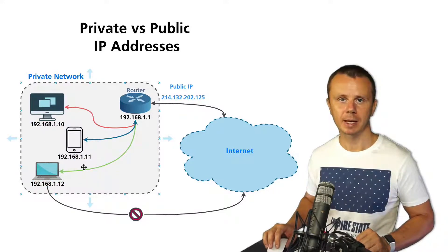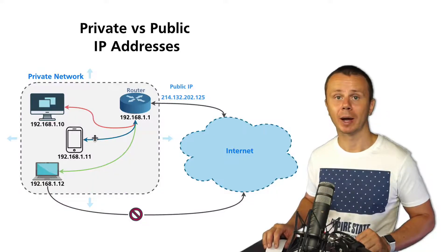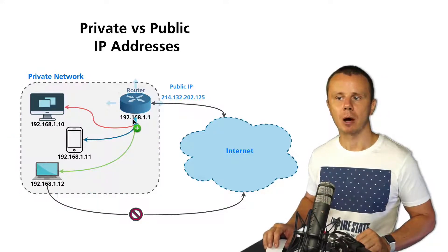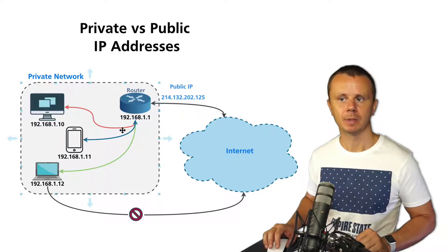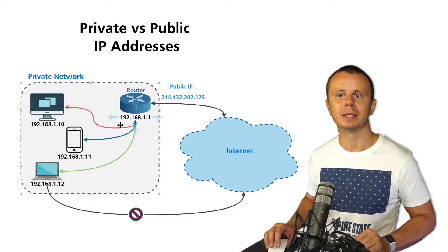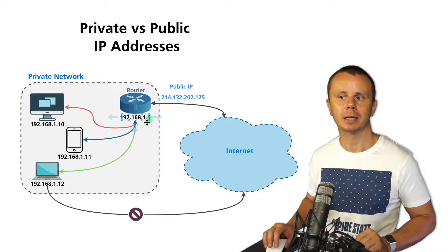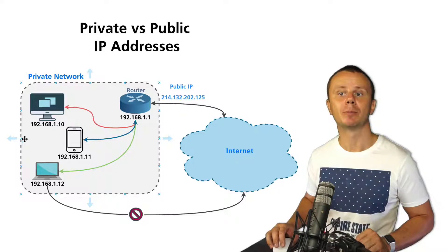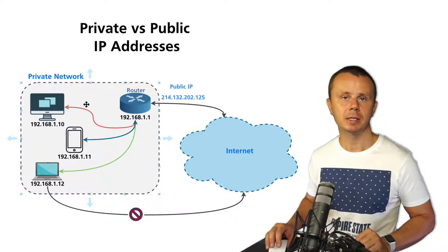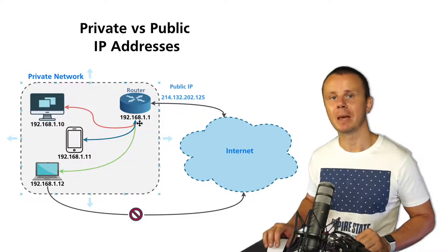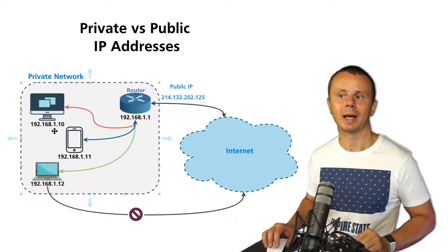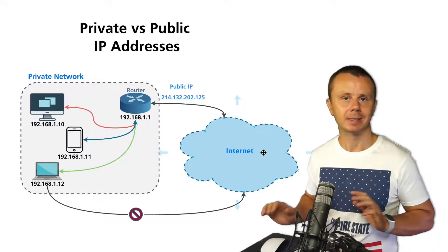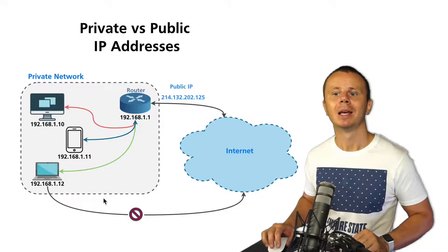Those IP addresses are again from the private IP address range. On this router's inner interface, you see an IP address from the same private network — in this example it has .1. Inside this private network, those devices can easily communicate with each other because their IP addresses are from the same network.